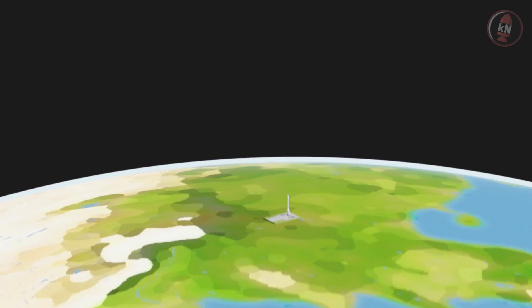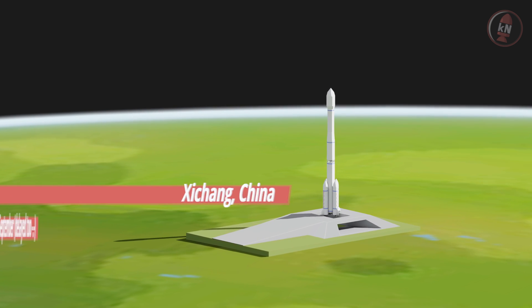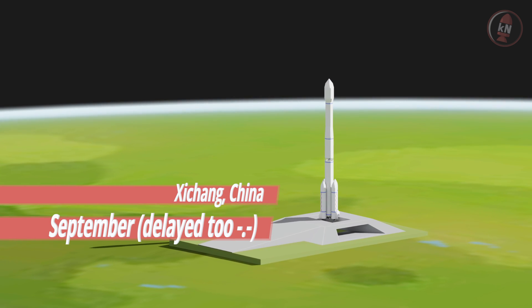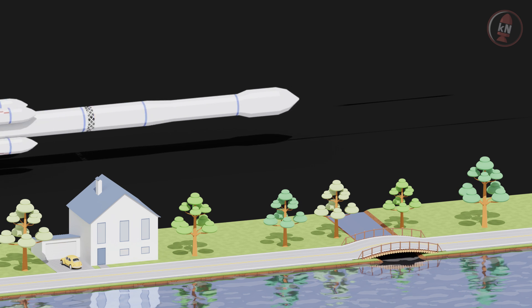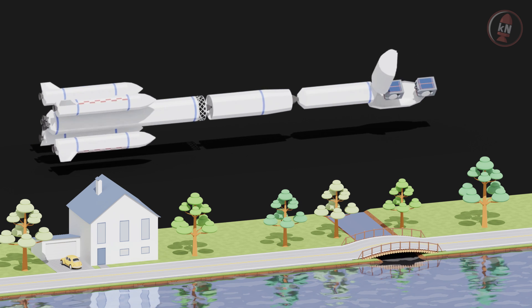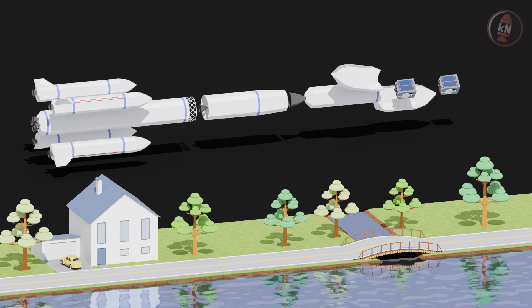Next up to launch is a Chinese Long March 3B and it also got delayed to September. Its destination is a medium earth orbit where the Chinese Baidu Navigation constellation is placed. And this means up top are of course two more of these Baidu satellites which launch quite regularly, almost once a month.